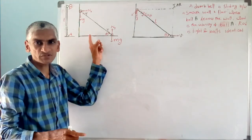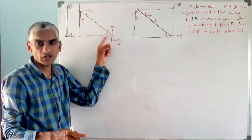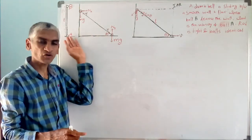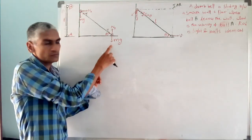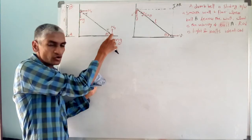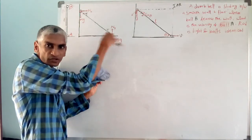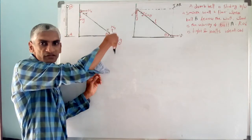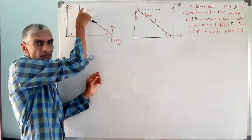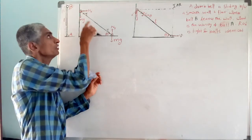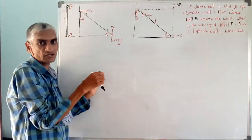At some general instant, the rod is inclined at theta with the horizontal before leaving the wall. Let us see the free body diagram. For ball B on the floor: its own weight Mg is downward, and the normal force from the horizontal surface N_Y is upward. For ball A on the wall: weight again Mg downward, and normal force from the wall N_X in the horizontal direction.